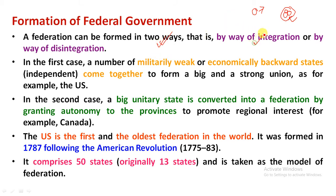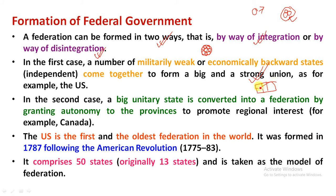There are two ways of forming a federation: integration and disintegration. In integration, independent military, provincial, or economically backward states come together to form a union — the United States of America is an example of this. In disintegration, a large state grants autonomy to its provinces, forming a federation — Canada is an example, being the second-largest country where provinces have autonomy. This is called provincial autonomy.